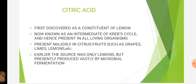Citric acid was first discovered as a constituent of lemon, but with advanced knowledge and research we now know that citric acid is an intermediate of the Krebs cycle and hence is present in all living organisms. Citric acid is majorly found in citrus fruits such as grapes, limes, lemons, oranges, etc. Earlier it was thought that lemons are the only sources for citric acid, but now it is vastly produced by microbial fermentation.